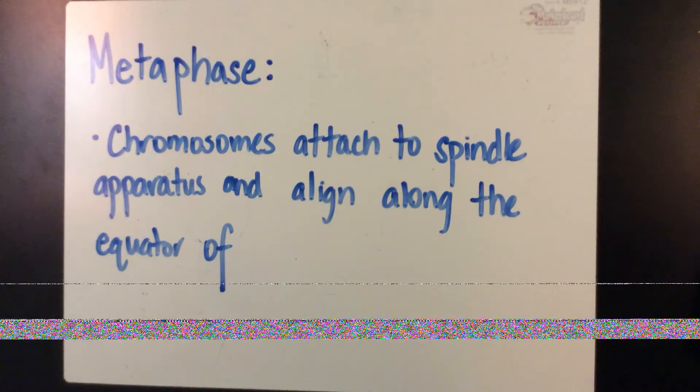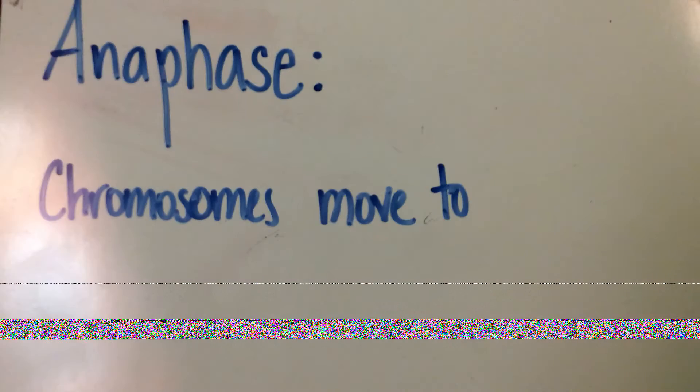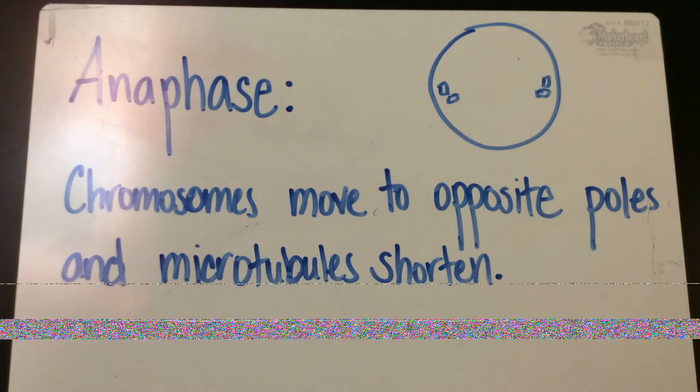Chromosomes align along the equator. Anaphase: microtubules shorten, moving the chromosomes to opposite poles. Telophase begins.